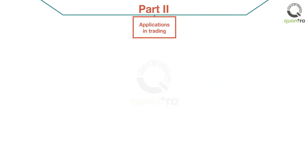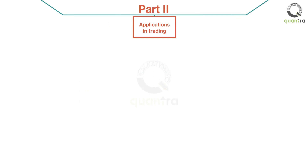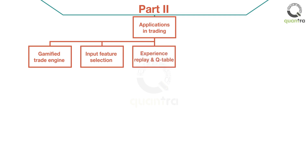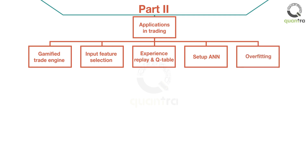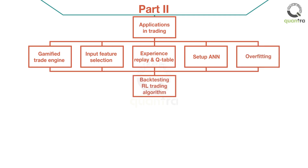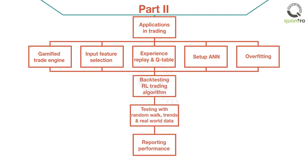In the second part, you will learn how the reinforcement learning model approaches trading through the concept of gamification. You will construct a state by using input features which are weakly predictive and weakly stationary. Develop a replay memory to store the experiences and use it to train the deep Q networks. You combine all the elements and backtest the strategy and evaluate the performance. You will also learn to run the RL model on synthetic data to appreciate the strength and weakness of the model.